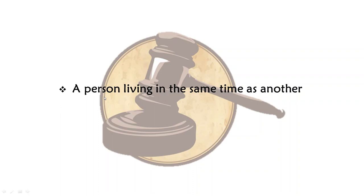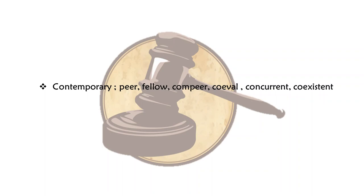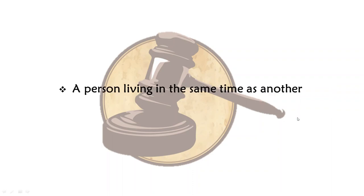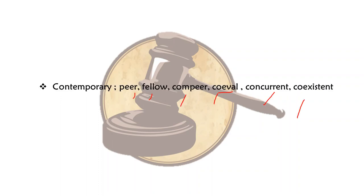A person living in the same time as another — if you and I are living in the same time, we would be called contemporaries. The synonyms are peers, fellows, coeval, concurrent and coexistent.